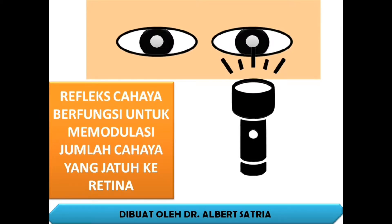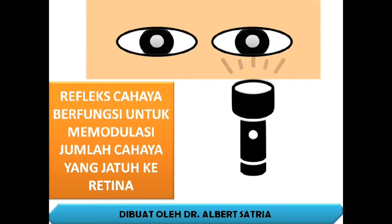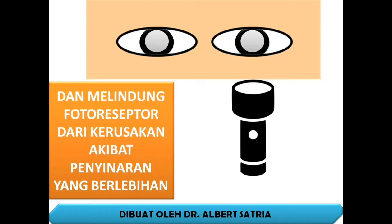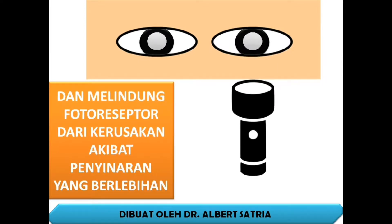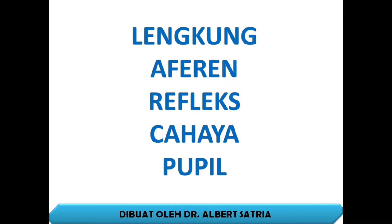Reflex cahaya berfungsi untuk memodulasi jumlah cahaya yang jatuh ke retina dan melindungi fotoreseptor dari kerusakan akibat penyinaran yang berlebihan. Berikut ini adalah lengkung aferen refleks cahaya pupil.